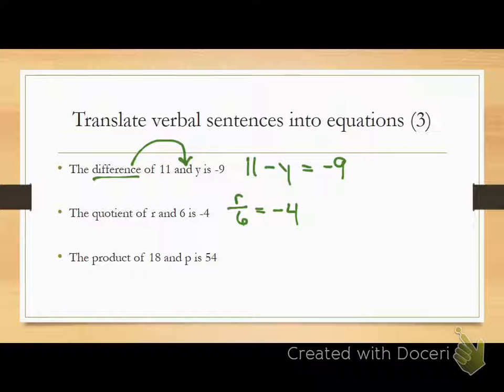And you can write it two ways. R divided by 6 equals negative 4, which is how I would write it, or you can write it with the division sign. What about the third one, Samantha?